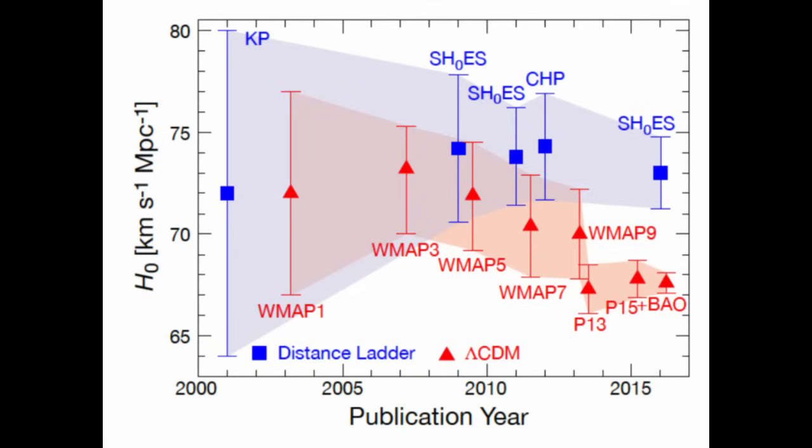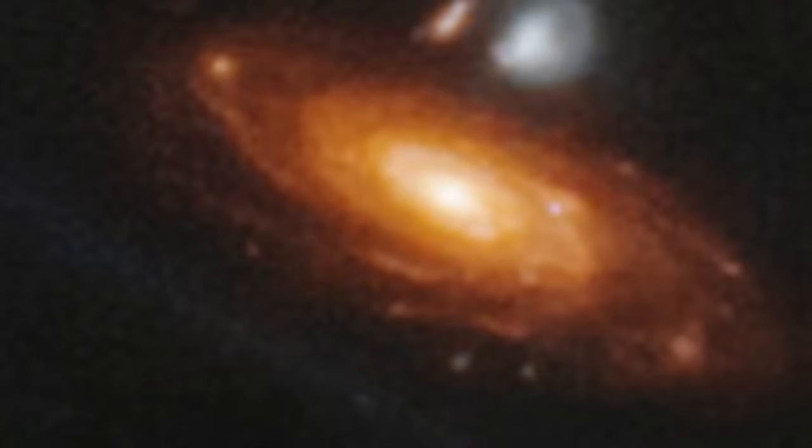When even theory is laughing at you, you know the road ahead is hard. But the Hubble Tension isn't the only puzzling proof of precocity the universe threw at us this year.